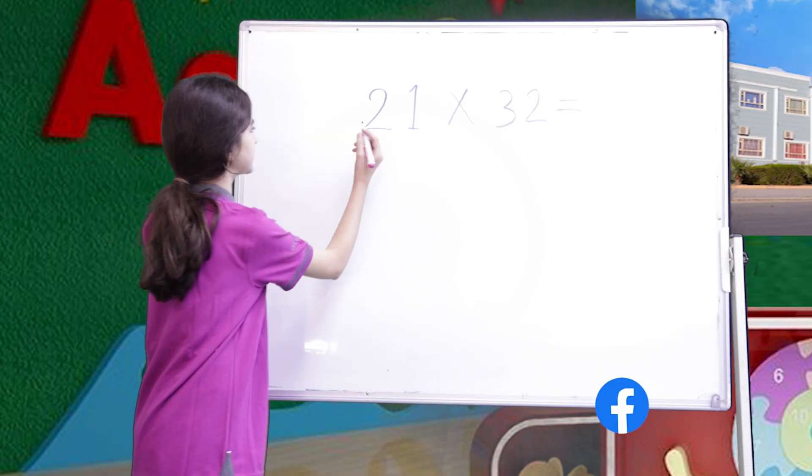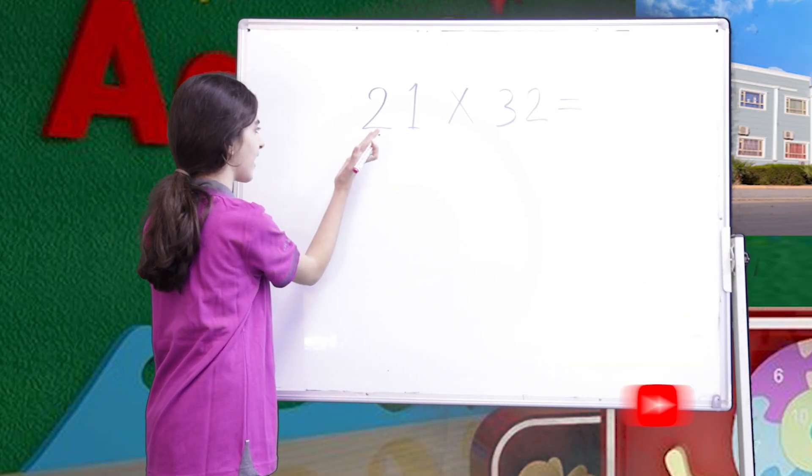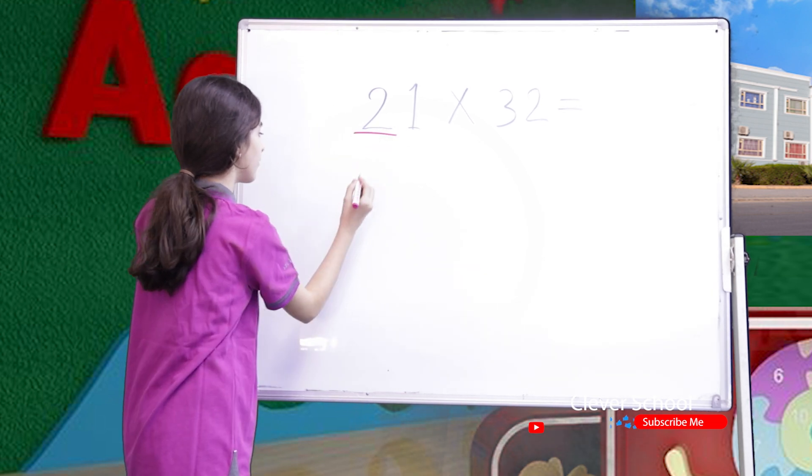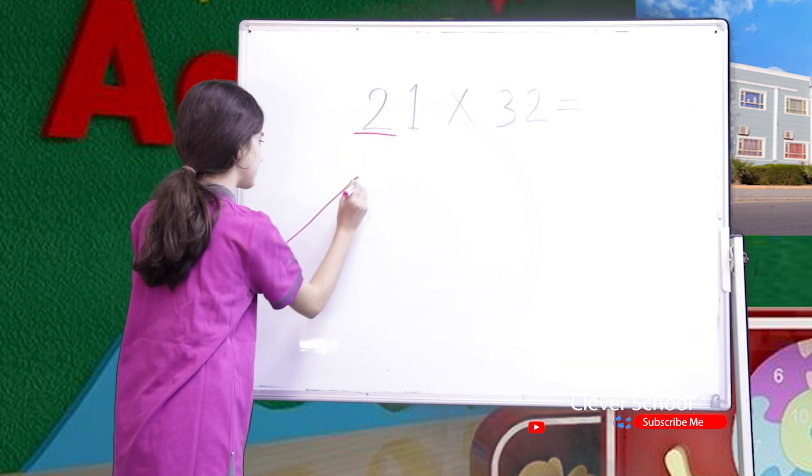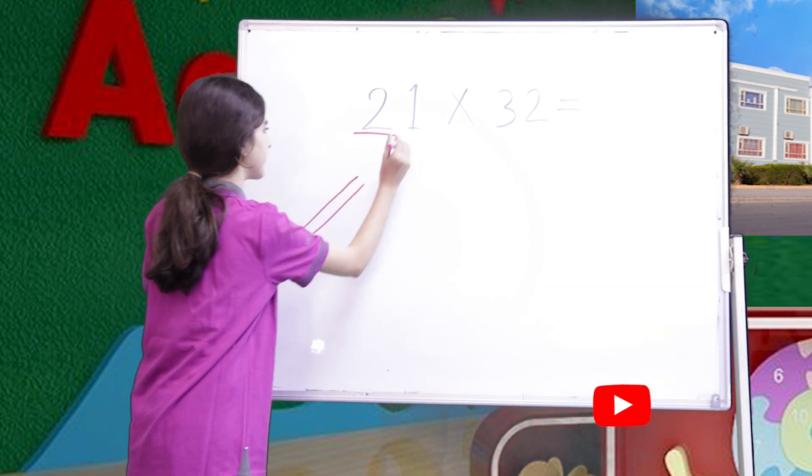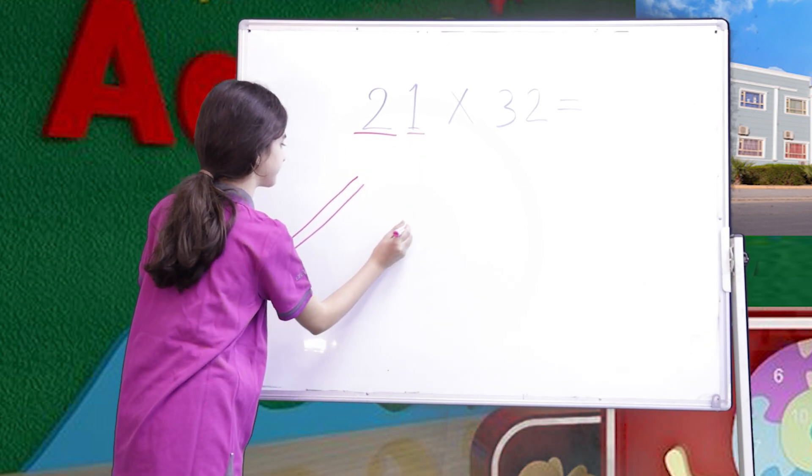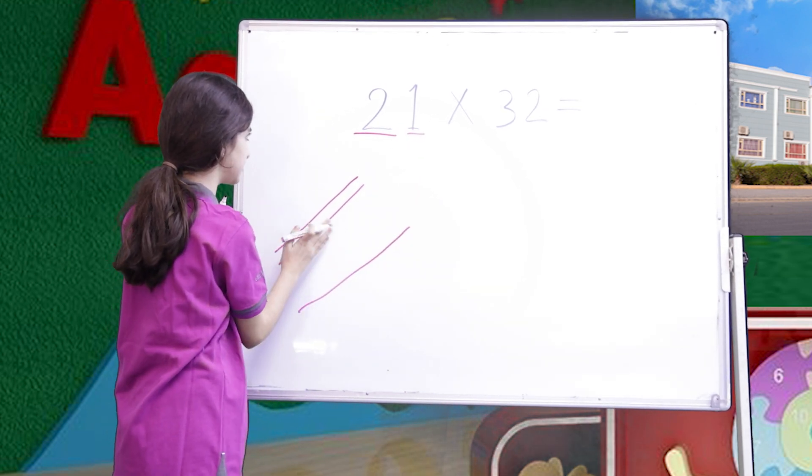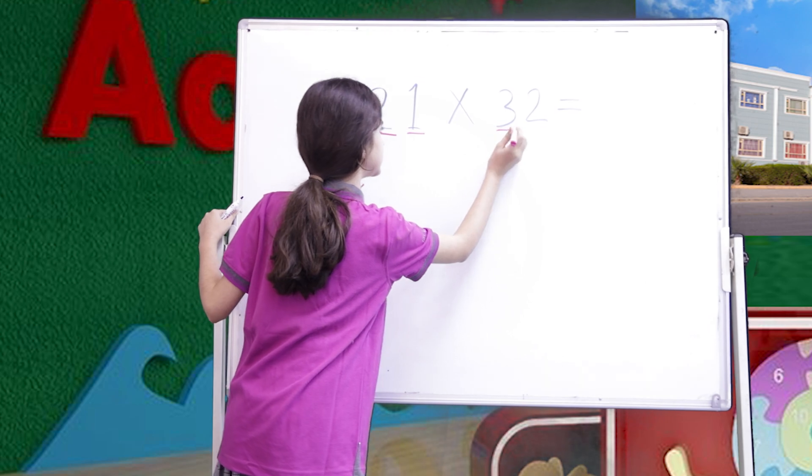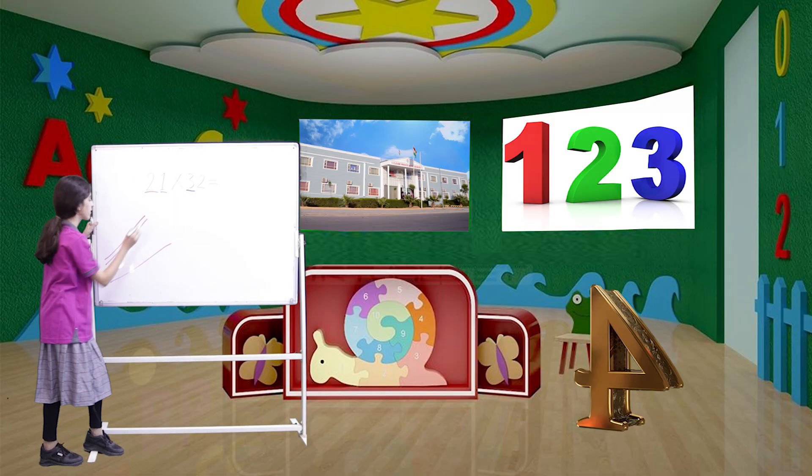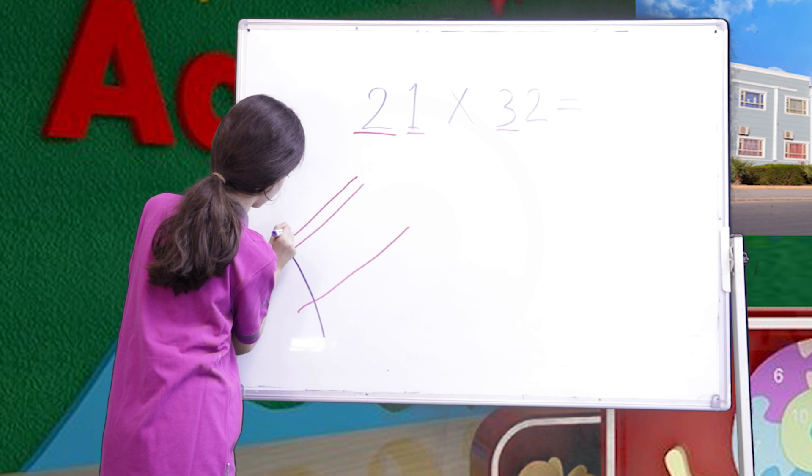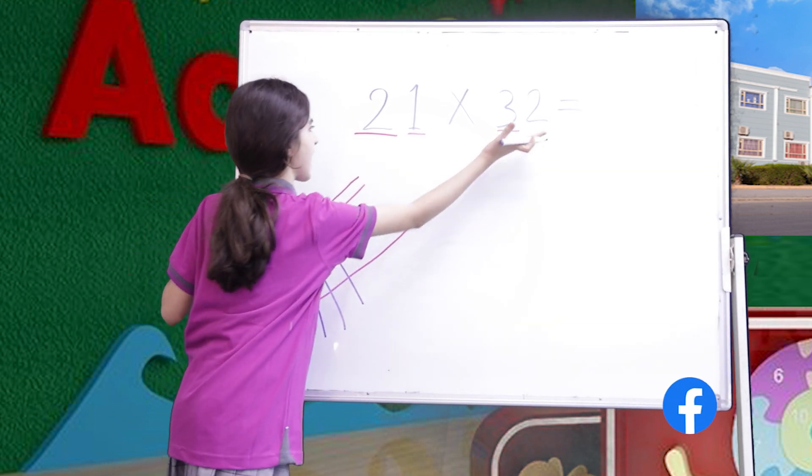First, as we can see, the first digit of our first number is 2. So we'll draw two lines, from here to here like that. And our second digit is 1. And there has to be some spaces. Our next digit is 3. We'll draw three lines. And then we have two.